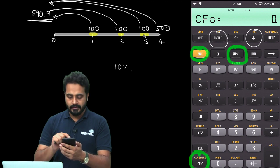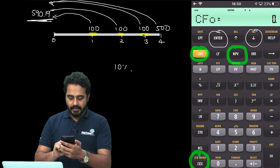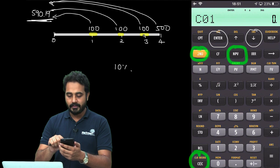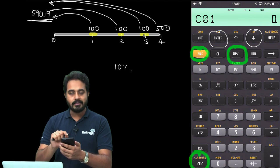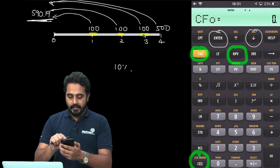I am pressing the cash flow button. Then I am going to say second clear work. So, that if there was anything, observe this, I am pressing downward arrow. If there was anything, that gets deleted.